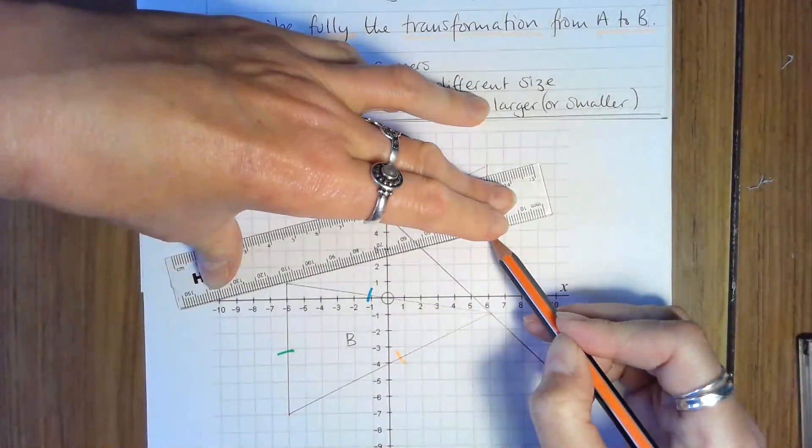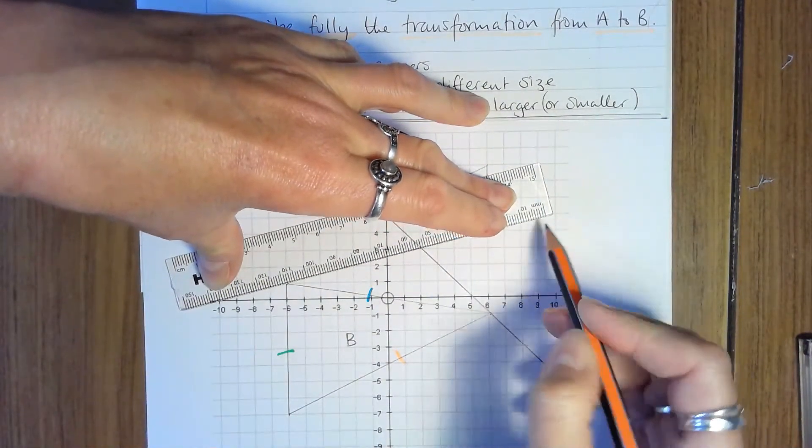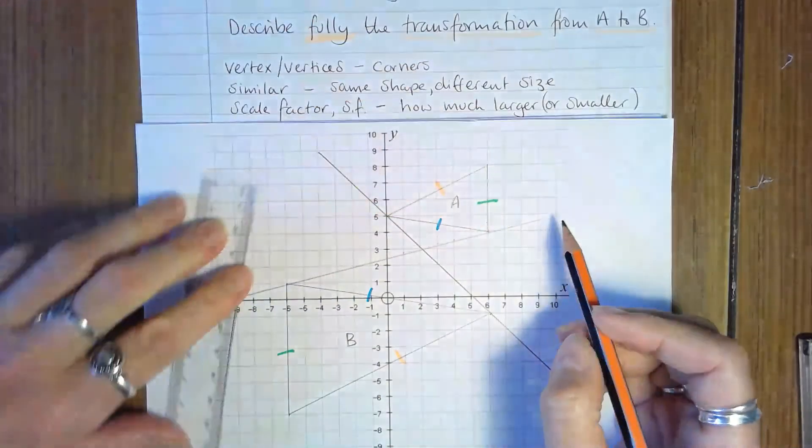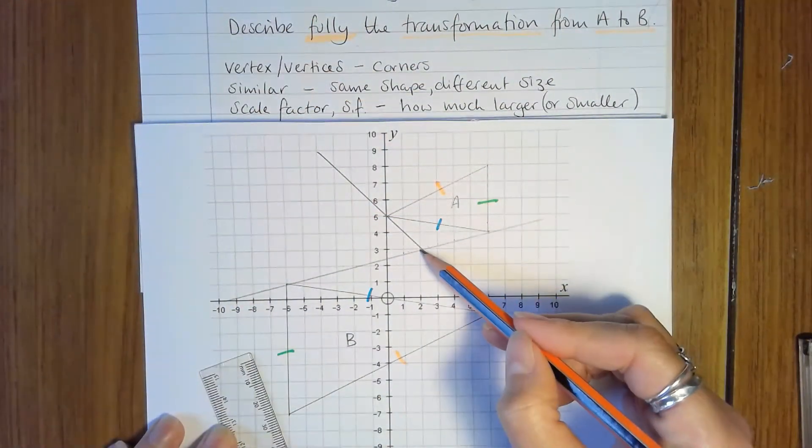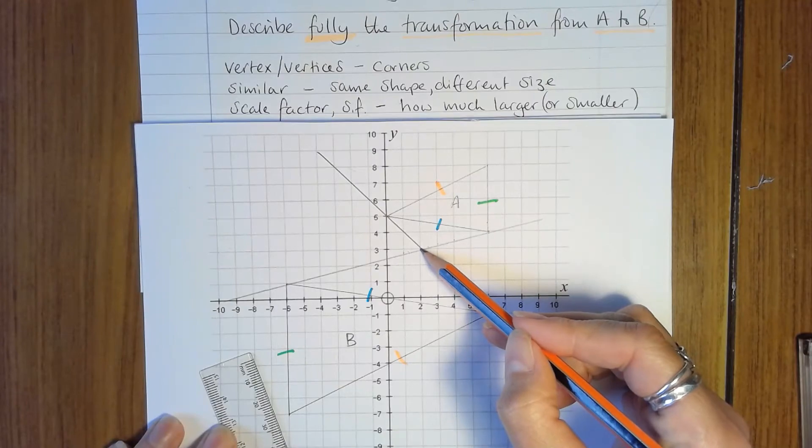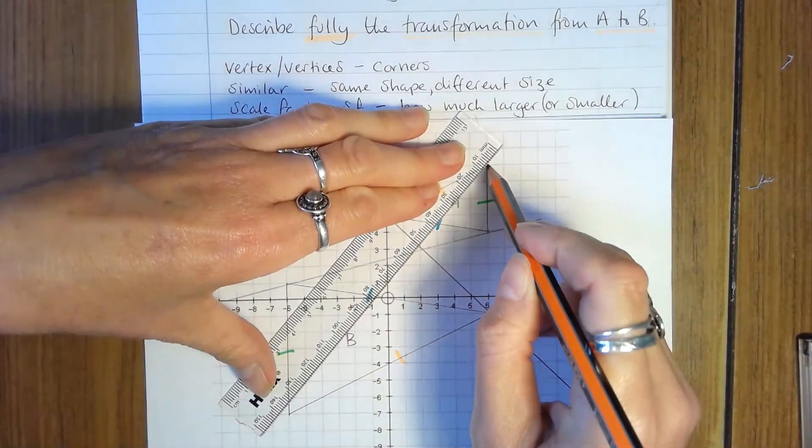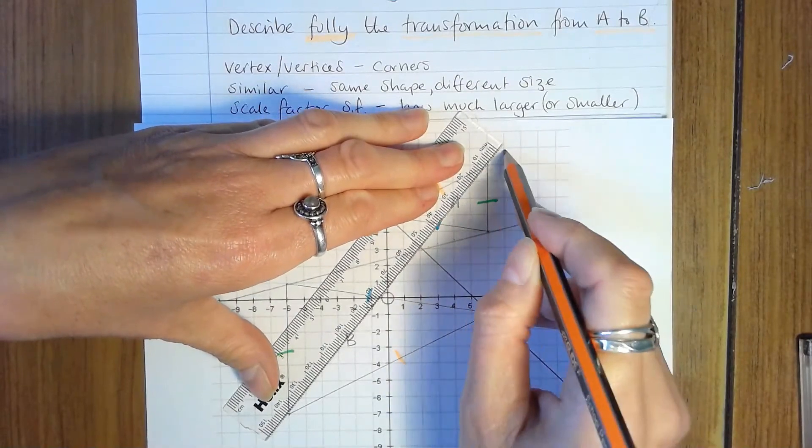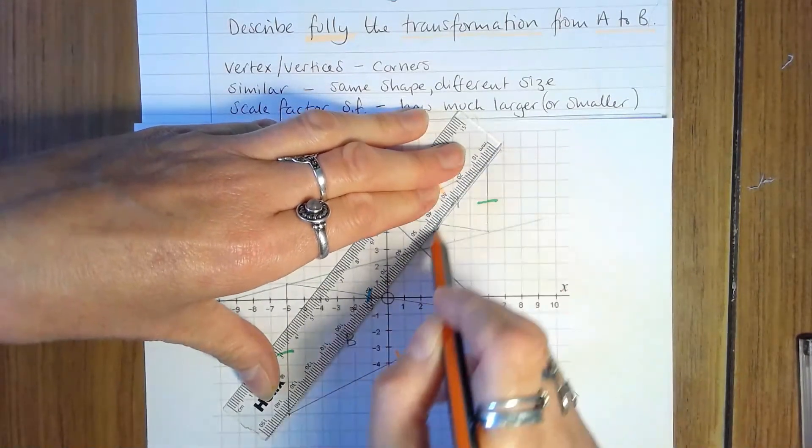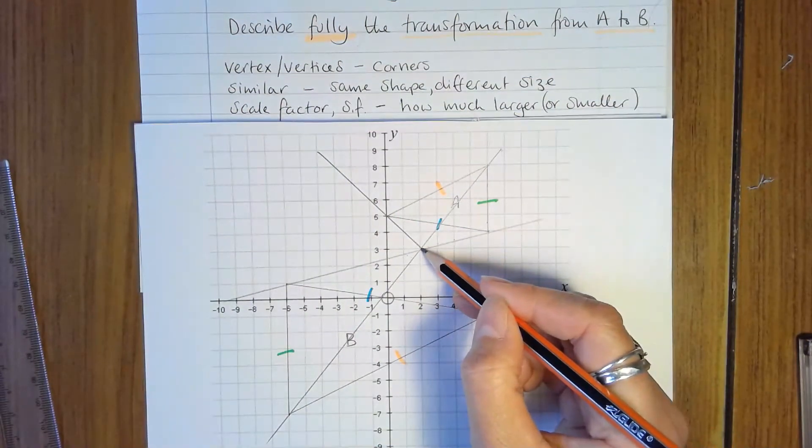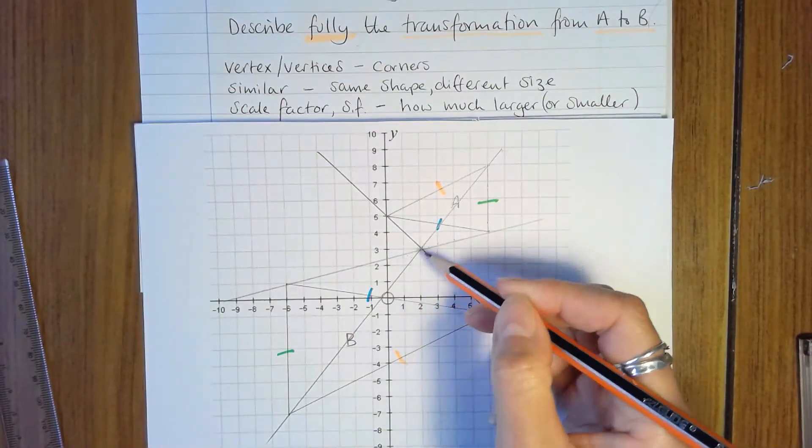On this shape, take care when you're placing your ruler to make sure that it goes exactly through the vertices. Now it looks like the center of enlargement is 2, 3, but it's good practice to draw a line through all vertices to confirm that, and I can see that it is 2, 3, the center of enlargement.